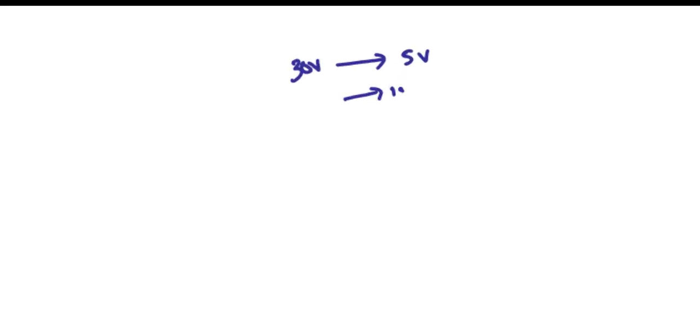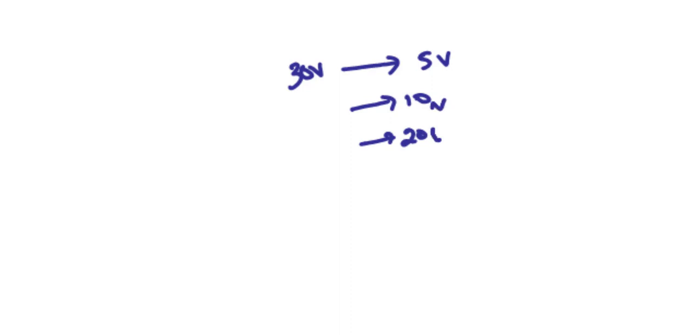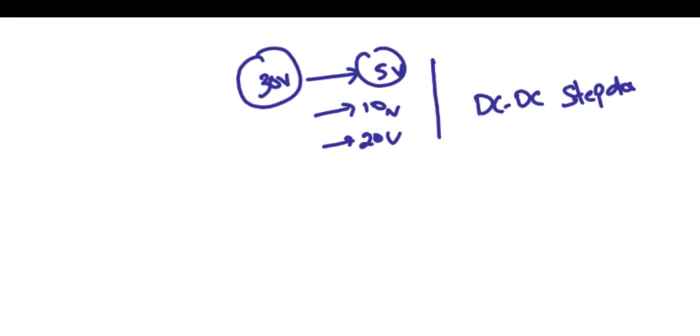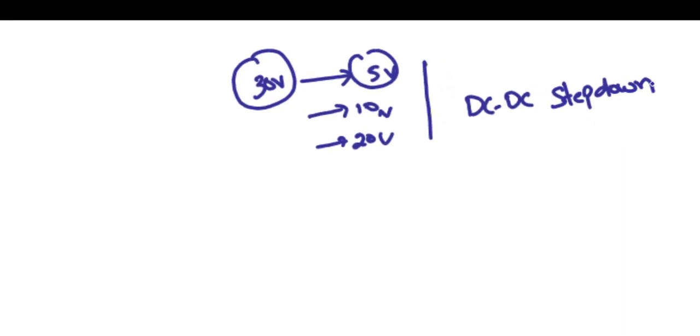Many of us may have come across power supplies where, for example, you have an input voltage of 30 volts and you want to reduce it to 5 volts, 10 volts, or 20 volts. When you want to reduce a voltage from a high level to a lower level, we require a converter called a DC-to-DC converter — specifically a DC-to-DC step-down converter.